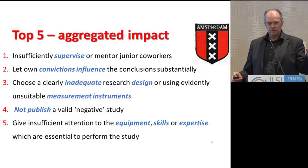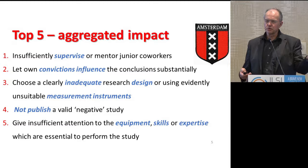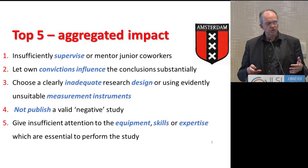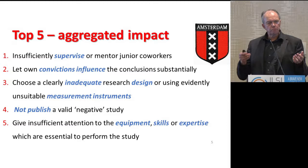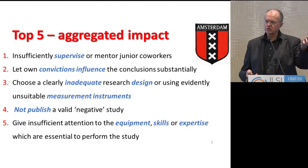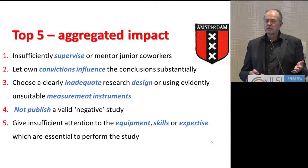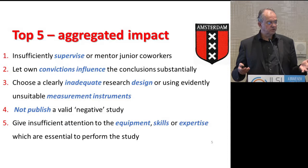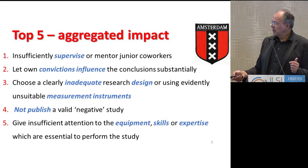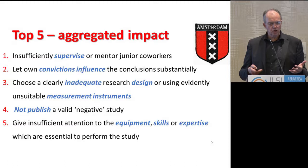In drug research, if you study the efficacy of a drug and compare it to a competing drug not quite meant for that patient type, and then dose it too low just to be sure, your favorite drug is going to win — that's a questionable research practice before the study even starts. Number four: not publishing a valid negative study — recognizable as a root cause of the replication crisis, since when negative studies aren't published, reproducibility suffers. Number five: insufficient attention to equipment, skills, and expertise — just really sloppy science.